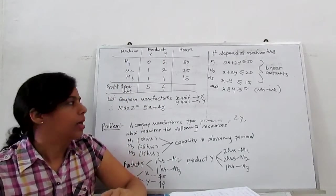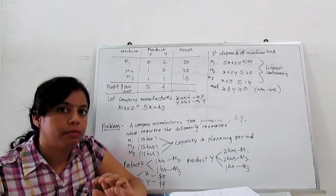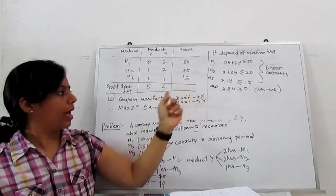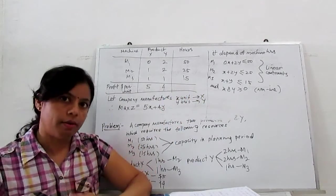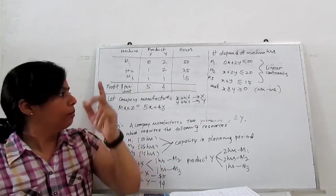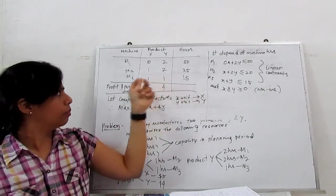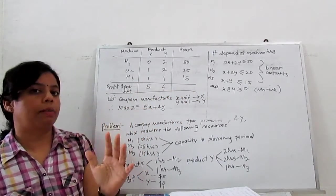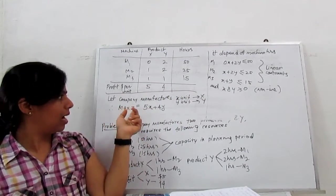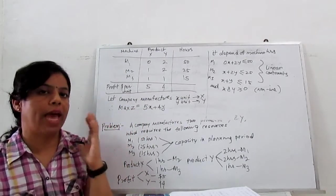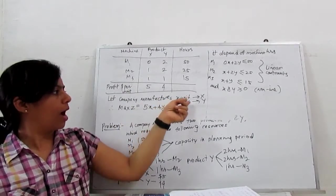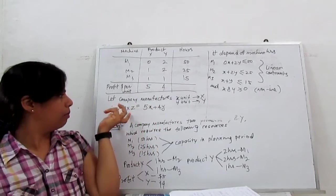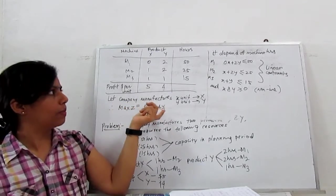Let's consider the manufacturer makes X units of product X and Y units of product Y. So profit will be: each X has $5 profit, so 5 times X. To maximize our profit is maximum Z. This is called the objective function of LPP. For Y units at $4, it's 4 times Y. Our objective function becomes: maximize Z = 5X + 4Y.